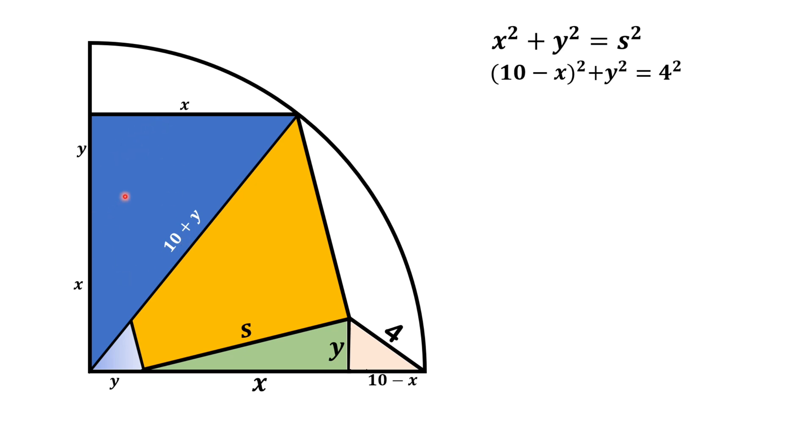So, from this blue triangle, we can write by using Pythagoras theorem x plus y square plus x square is equal to 10 plus y square. Now, to find the value of side length of the square s, we have to solve these three equations.